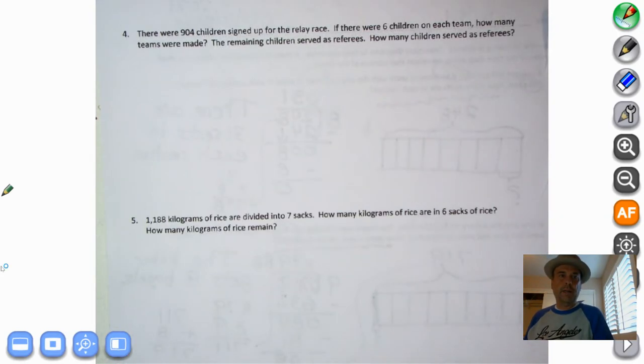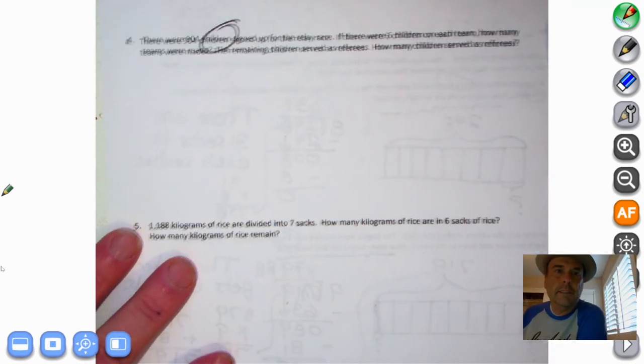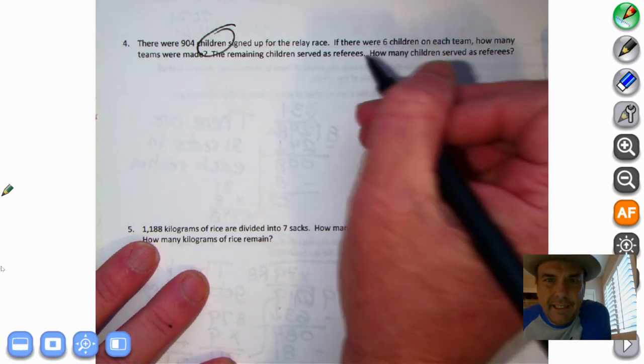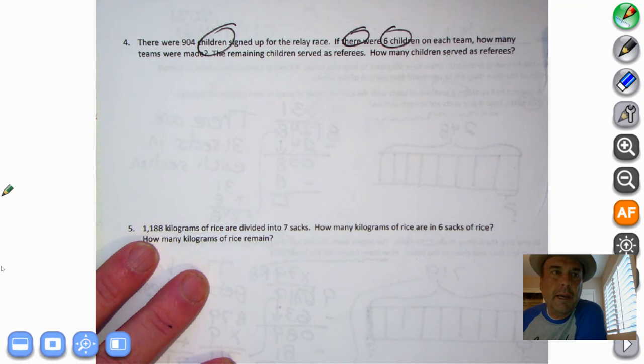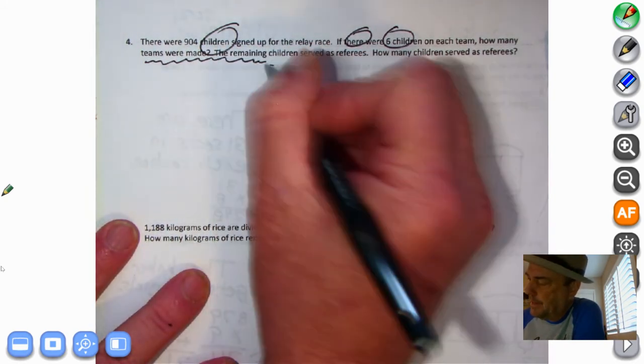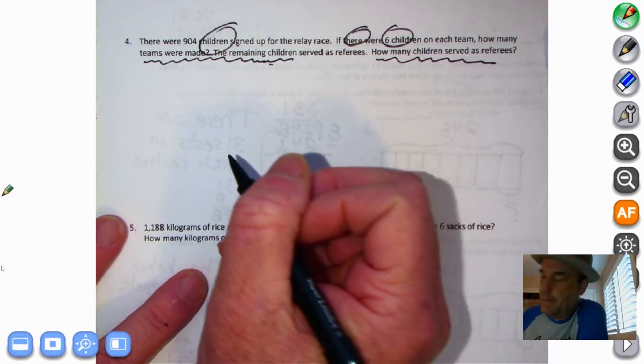All right. This is our next problem. Then we're going to take a little brain break. There were 904 children signed up for the relay race. If there were eight children, or is that eight or six? Six children. Oops. I can't circle that. Six children on each team. How many teams were made? The remaining children served as referees. That's kind of sad. How many children served as referees? Well, maybe they got to. That's what we need to figure out right there. All right. So it's our whole. We have 904 children.